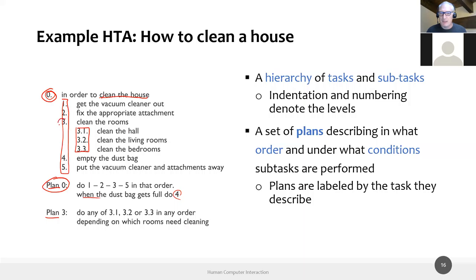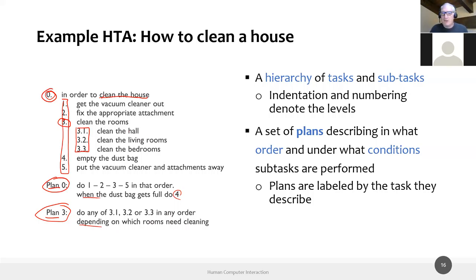For task three, a complex task composed of different subtasks, the plan says you can do any of 3.1, 3.2, or 3.3 — one, two, or all three in any order, depending on which rooms need cleaning. So we have optional activities, optional ordering, and optionality of different tasks. In this way we are describing, in a simplified way, one or many processes we can implement.